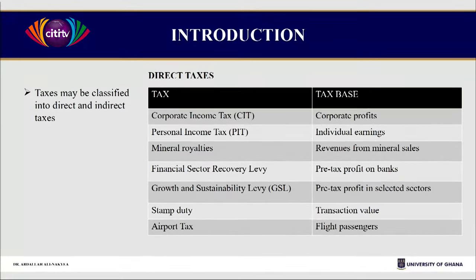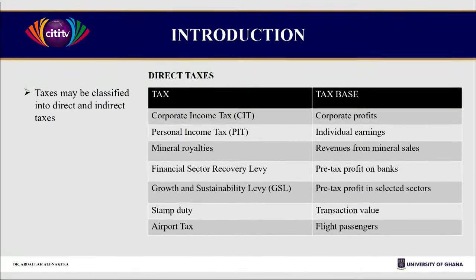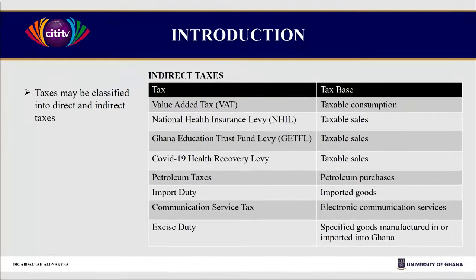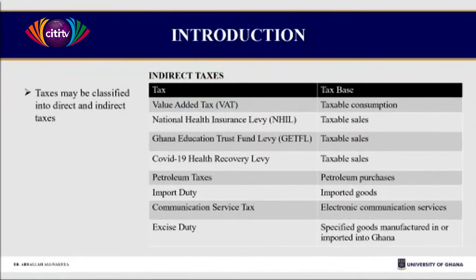There is also the financial sector recovery levy on pre-tax profits, the growth and sustainability levy, stamp duty, and airport tax. If you take the indirect taxes, then you are looking at the almighty value-added tax — I call it almighty.